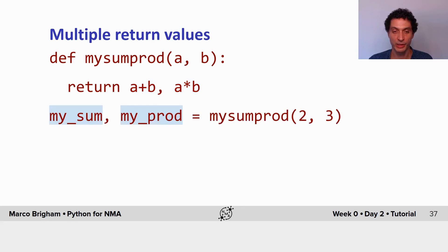And to receive them you specify two variables that will take, this one will take the values of the sum, the first return value and this one of the second return value.